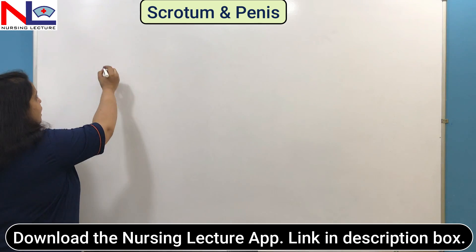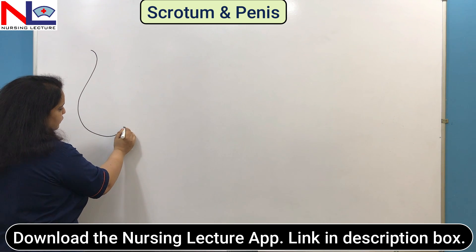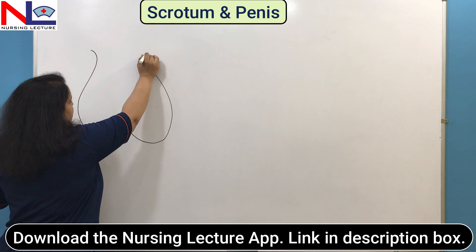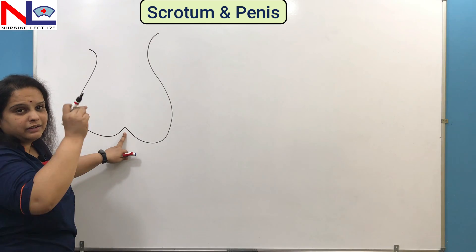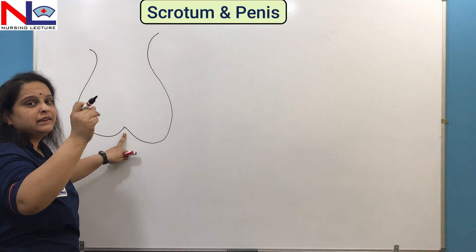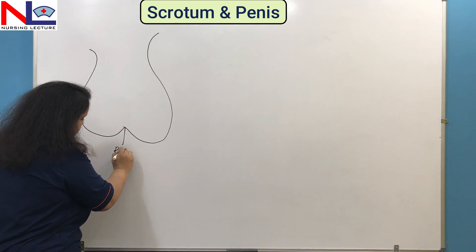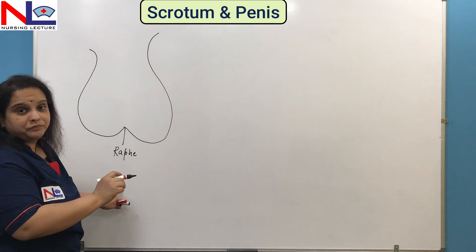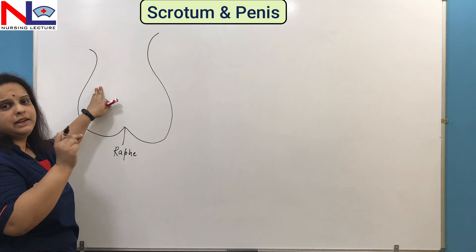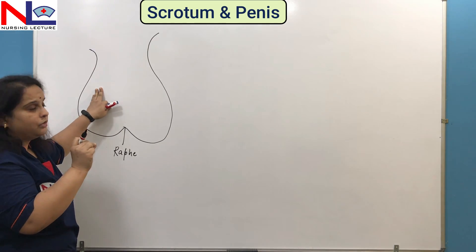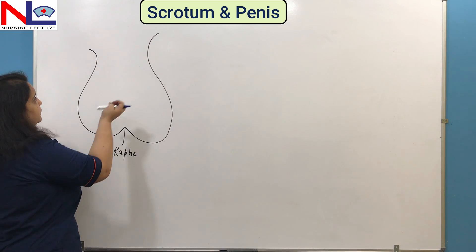The scrotum is a pouch-like or sack-like structure. Externally it looks like a single pouch. There is one median ridge — an elevated line on the external surface — which is called the raphe. A median bridge is present over the external surface of the sac of the scrotum.